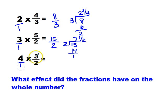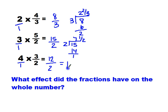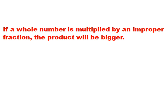Take a look at this one: 4 times 3 halves. 3 halves is 1 and a half times bigger, so think about what 1 and a half times 4 would be. What's half of 4? 2, right? So I'm thinking my answer should be 6. 4 times 3 is 12, and 1 times 2 is 2. 12 divided by 2 is 6. I've got a number 1 and a half times bigger than 4, because I multiplied it times 1 and a half. So what effect did the fractions have on the whole number? This time they increased. If a whole number is multiplied by an improper fraction, the product will be bigger, because I'm multiplying by a number that's bigger than 1. It's kind of common sense.